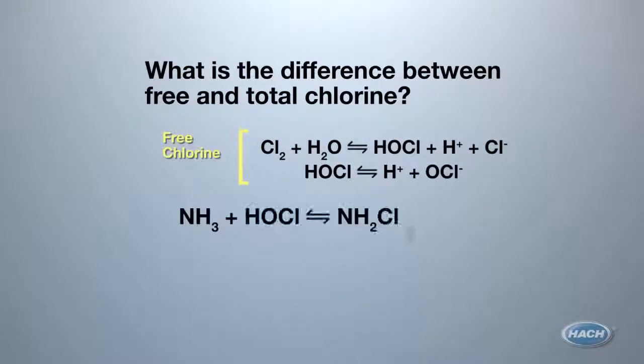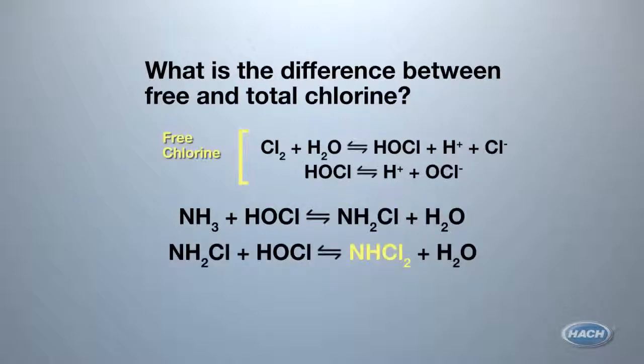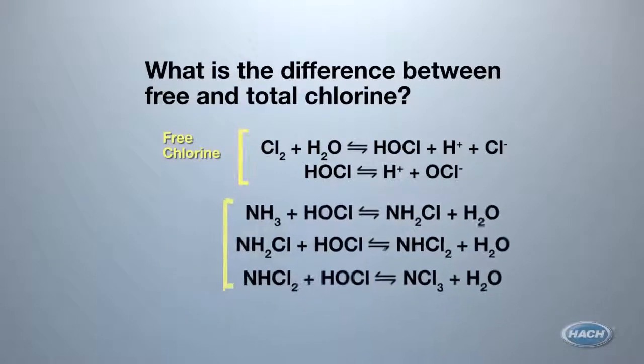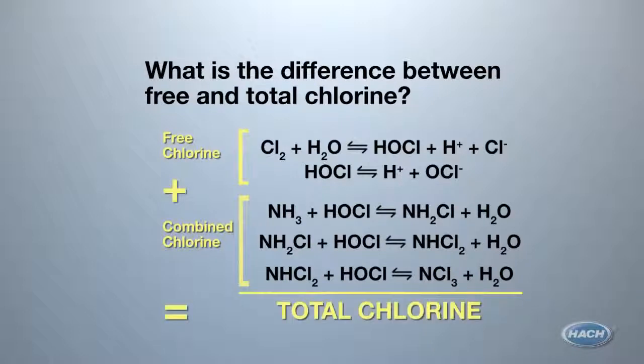When ammonia is also present, monochloramine, dichloramine, and trichloramine will form, as we saw. Chloramines are also known as combined chlorine. Total chlorine is the sum of free chlorine and combined chlorine. The level of total chlorine will always be higher than or equal to the level of free chlorine.